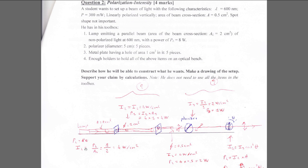Starting with the lamp: 8W over 2 cm² gives an intensity of 4 W/cm². Place the first metal plate — the beam area becomes 1 cm², power drops to 4 W. Place a second metal plate offset to pass only half the beam — area becomes 0.5 cm², and since intensity is unchanged at 4 W/cm², the power is now 2 watts.